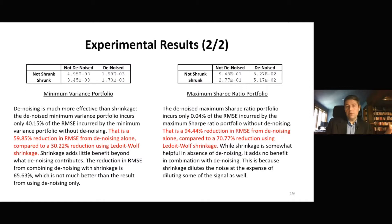It's a relatively straightforward operation that helps us reduce the root mean square error in the estimation of the efficient frontier by 60%. And when we combine the two — denoise and shrinkage — essentially we get the same improvement as denoise alone. So what this tells us is that shrinkage helps a little bit, much less than denoising, and in fact denoising accomplishes all the reductions that the shrinkage accomplishes. There is essentially a perfect overlap between the two — it's just that denoising is more effective.